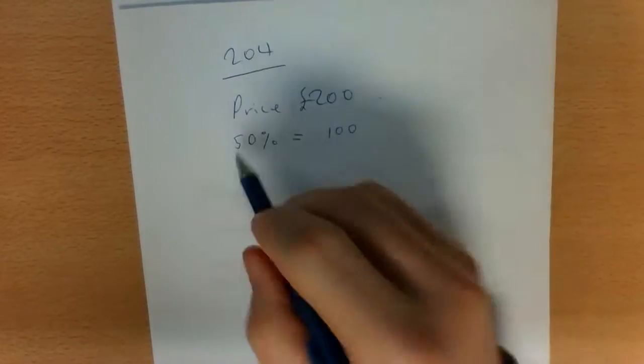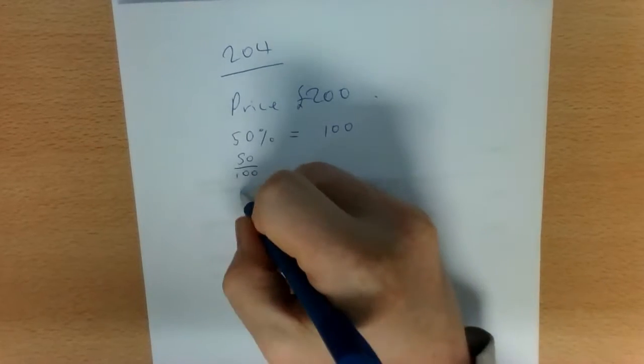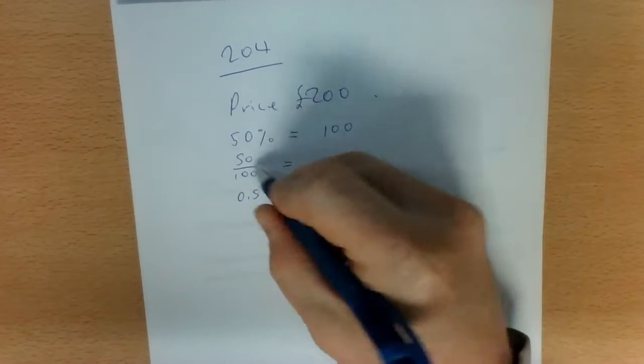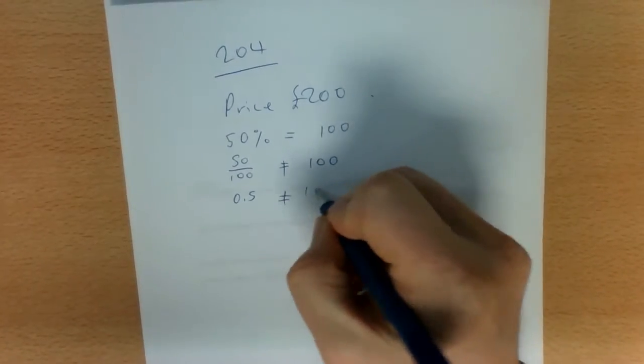Now, that is wrong because 50% is just a fraction. It's just 50 over 100. So in other words, it's a decimal. And 50 over 100 is definitely not equal to 100. And 0.5 is definitely not equal to 100.